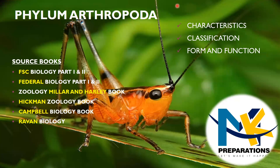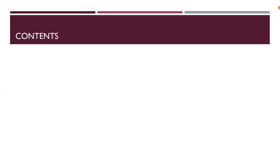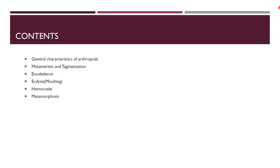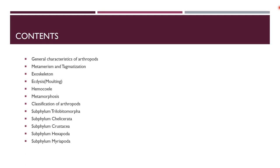Let's start our topic properly. First of all we'll list the contents to be discussed. It includes the general characteristics of arthropods, metamerism and tagmatization, exoskeleton of arthropods, ecdysis or molting, hemocoel, metamorphosis of arthropods, classification of arthropods, subphylum Trilobitomorpha, Chelicerata, Crustacea, Hexapoda, and Myriapoda.